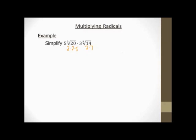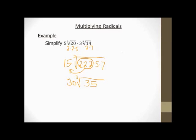Alright, so I'm going to go ahead and put my coefficients together — 5 times 3 is 15. Start my radical; remember my index is a 3. Now I bring down all my prime factors: 2 times 2 times 2, put them all into the same radical. I have a 5 and I have a 7. So I'm going to look for groups of 3 of the same things, since my index is a 3. I bring out one of those 2s. So 15 times 2 is 30, times the cube root of whatever's left over — that's 5 times 7, which is 35. So my answer is 30 cube root of 35.